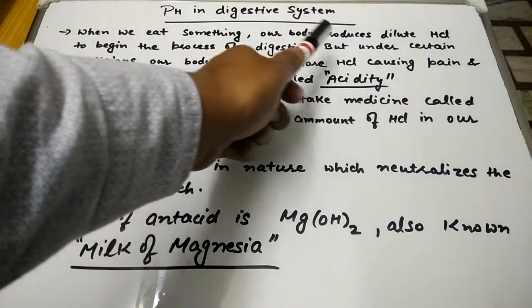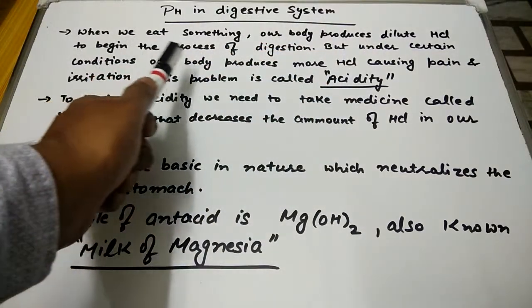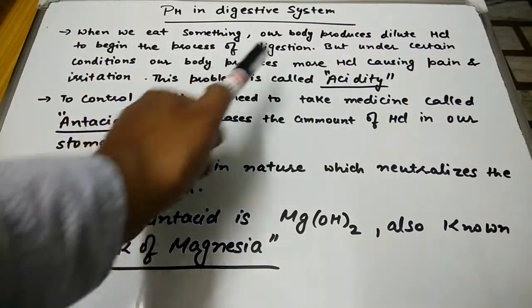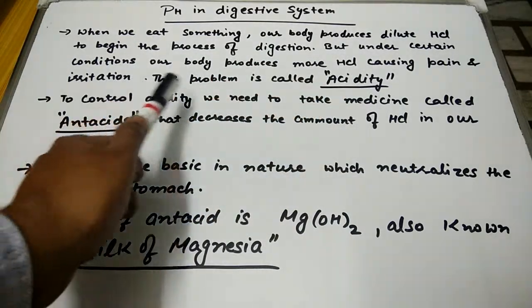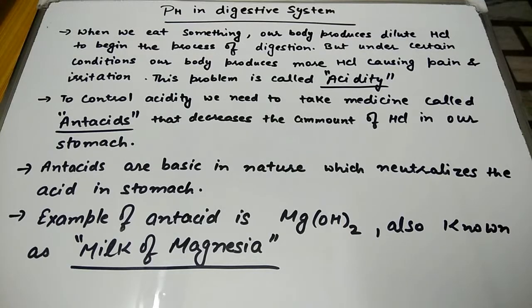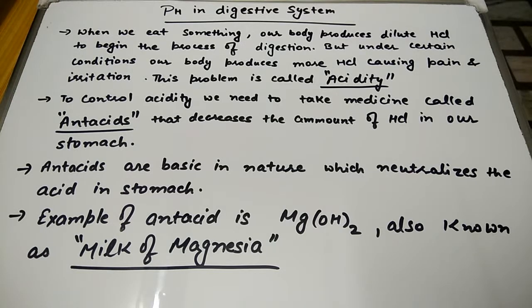When we eat something, our body produces dilute HCl to begin the process of digestion. But under certain conditions, our body produces more HCl, causing pain and irritation. Due to unhealthy eating habits or having more junk food, more HCl is produced in our body, increasing the acidic level in our stomach and causing pain and irritation. This problem is called acidity.